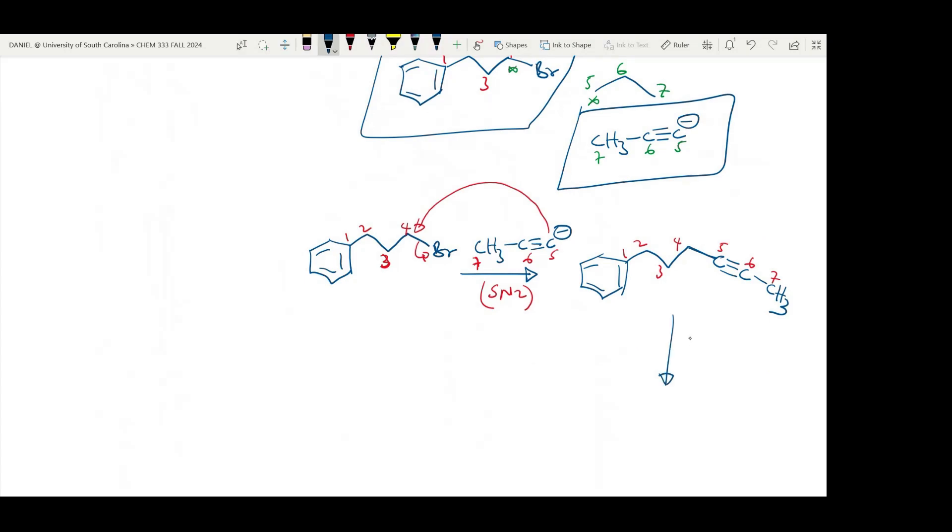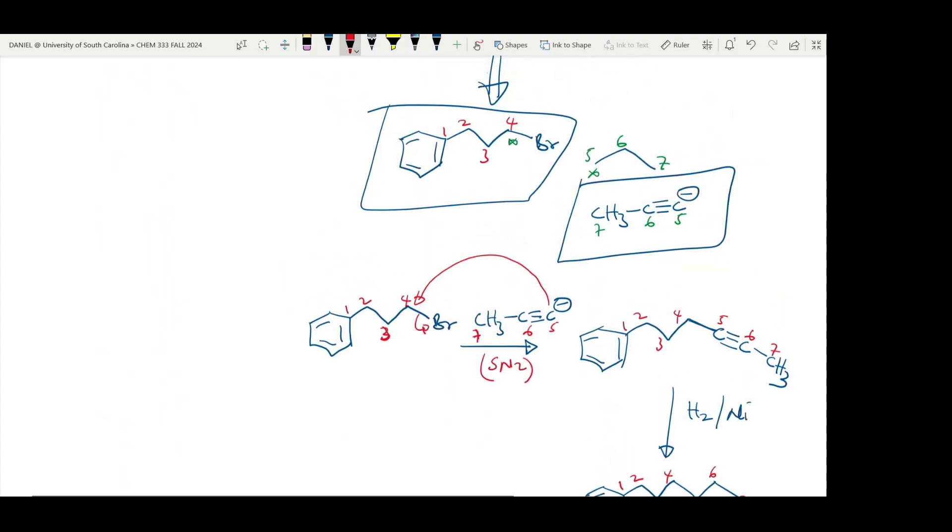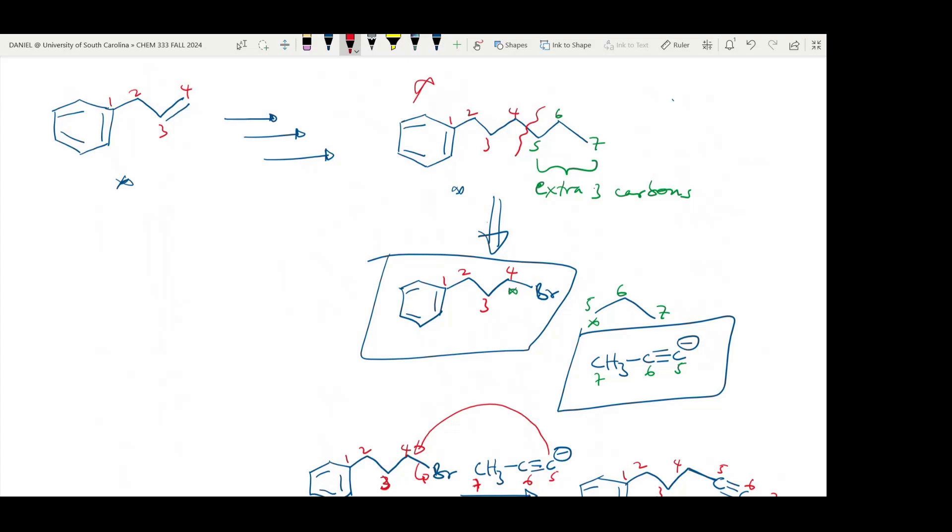If we subject this to hydrogenation, let's react this with hydrogen and nickel catalyst, or palladium or platinum catalyst. The triple bond will be converted to alkane. 1, 2, 3, 4. Carbon 4 is joined to 5, 5 to 6, 6 to 7. 1, 2, 3, 4. And this is the same thing as the product we have here.